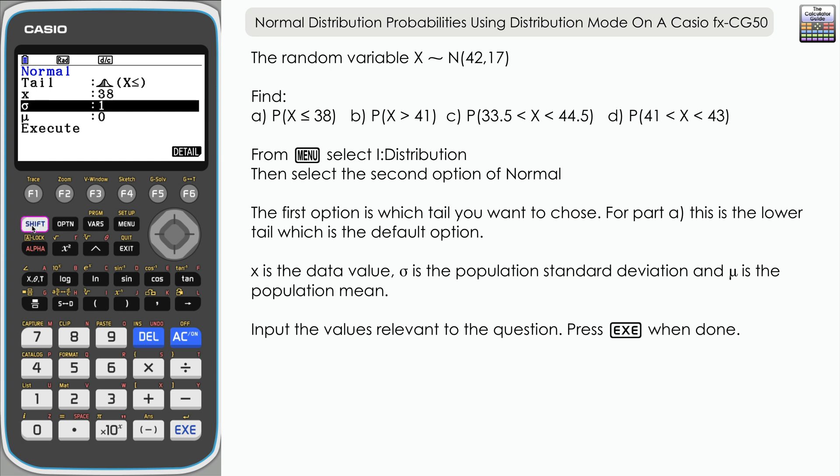If you do shift, square root, and 17, press execute, and we've got the value there for the standard deviation. Finally, we've got the mean, which is 42.